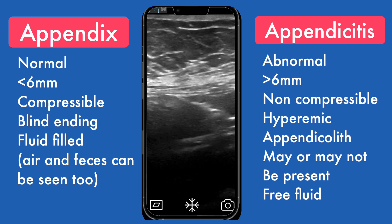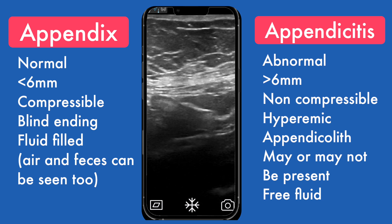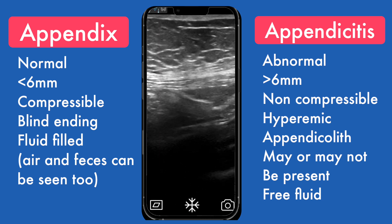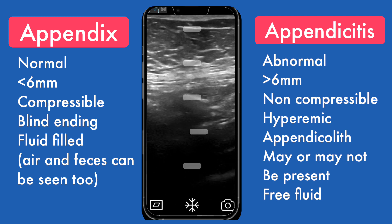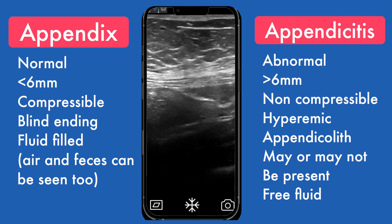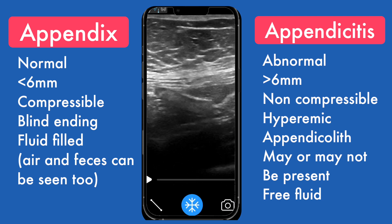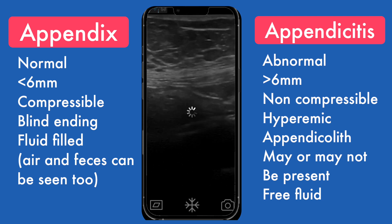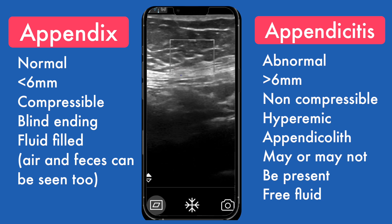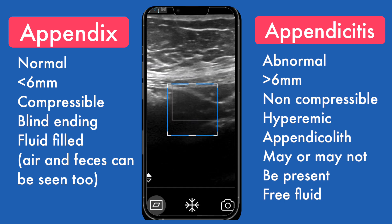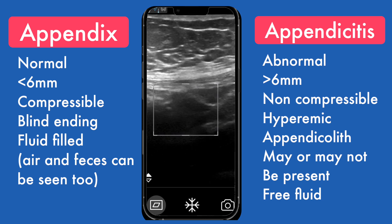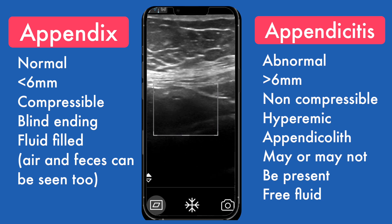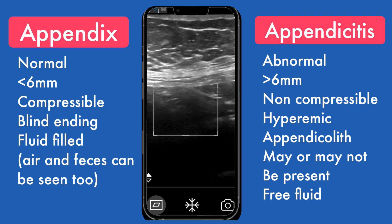After I'm done with my transverse images, I go into sagittal and take several images of it. I put color Doppler on it to make sure there's no hyperemia, and check out the surrounding tissues to make sure there's no adenopathy. This is a normal appendix in an adult with no symptoms — I'm just doing a demo on them.